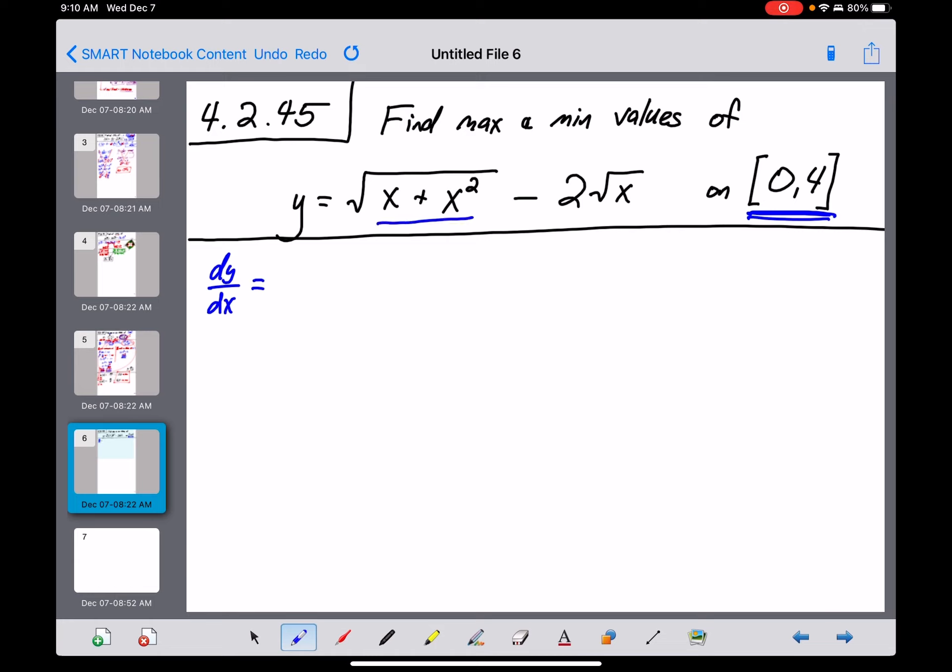This quantity right here is being taken to the one-half power. And so its derivative is going to be one-half times the same base, x plus x squared. Drop the power by one. That's a negative one-half times the derivative within. That derivative is going to be a one plus that derivative there, a two x.